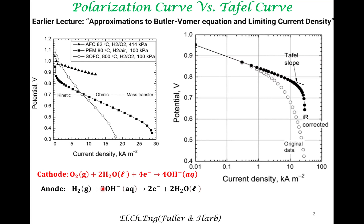Let's first look at a typical Tafel plot. The y-axis is the same as the y-axis of a polarization curve, but the x-axis is quite different — the x-axis is in the log scale, and you plot the current density in a log scale. That is because of the form of the Butler-Volmer equation and under the Tafel approximation. The reasons for plotting it in this way depend upon the Tafel approximation. Another way to look at this curve is by analogy with the Arrhenius plot from chemical reaction engineering or chemical kinetics, where you plot activation energy aspects with respect to temperature.